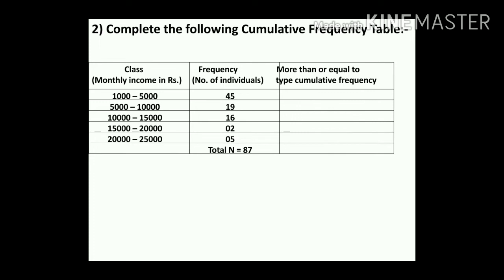The first column shows monthly income groups: 1000–5000, 5000–10000, 10000–15000, 15000–20000, 20000–25000. The frequencies (number of individuals) are: 45, 19, 16, 2, 5. The total frequency is 87.